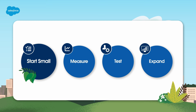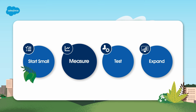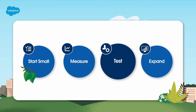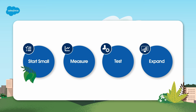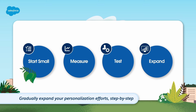Start small. Create small, manageable segments of your audience and begin with one or two personalized attributes per email, like the recipient's name and a banner image relevant to their industry. Then send out your emails and carefully track the results. This method allows you to see what's working and what's not, giving you valuable insights for future campaigns. Armed with experience and a growing understanding of your audience's preferences, you can gradually expand your personalization efforts — it's a step-by-step process that helps you make data-driven decisions and continuously improve your email marketing over time.